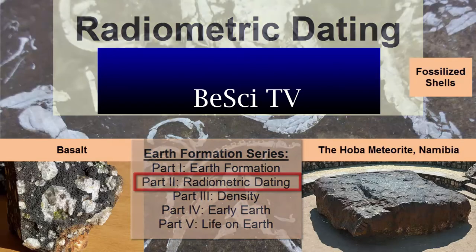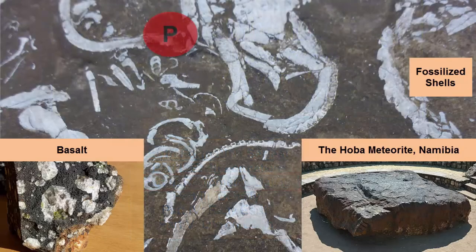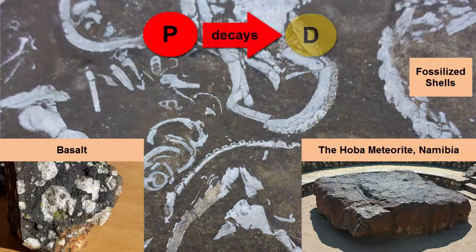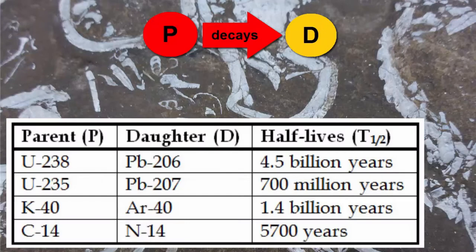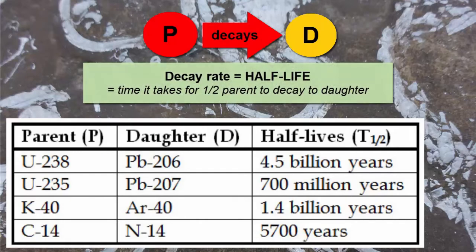First step, we need to identify a radioactive parent material that is present in our rock and that decays into daughter material at a rate that ensures enough of both parent and daughter in the rock to measure them. There are a number of parent-daughter radioactive decay pairs, and each pair has a different decay rate known as a half-life. Half-life is the amount of time it takes for one half of the original parent radioactive material to decay into daughter product.